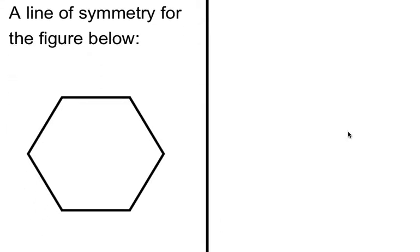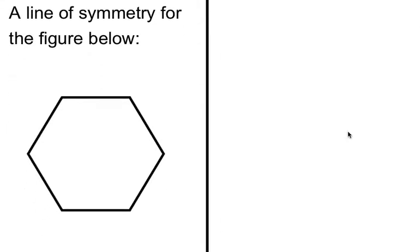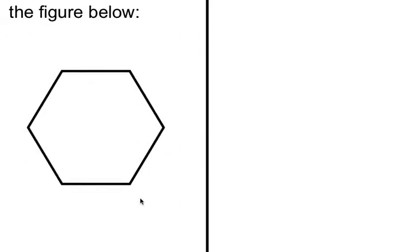So, this last construction, a line of symmetry for the figure below. Now, remember, there's a synonymous way you can say this. Like, if I ask you for a construction that maps a figure onto itself, I'm asking for the same thing. I'm asking for a line that can cut this guy in half. Now, we actually did this exactly for the warm-up, so I'm just going to kind of arbitrarily pick one here.